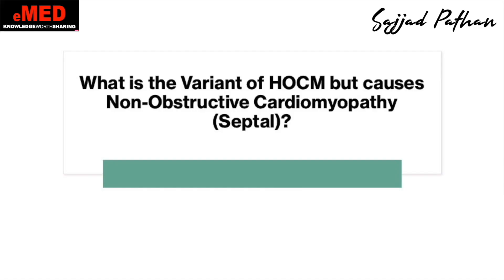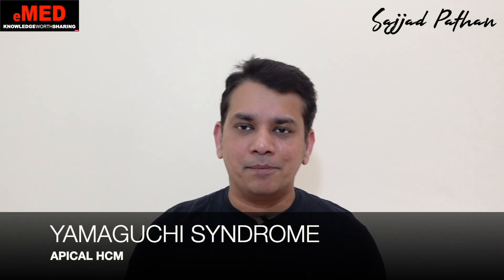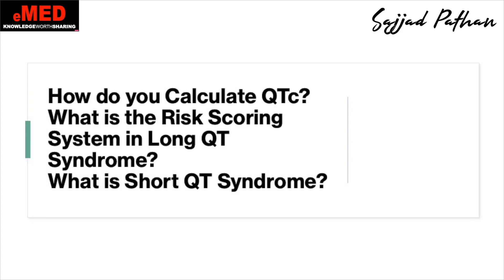Before we end, let's answer the earlier question: what is the variant of hypertrophic obstructive cardiomyopathy that is not obstructive? It is called Yamaguchi Syndrome, where the hypertrophy is apical — it is commonly seen in Japan. Lastly, how do you calculate QTc, what is the risk scoring system used in long QT syndromes, and what is your understanding of short QT syndrome? Put your answers in the comments. Good luck for your exams — study well, stay safe, please subscribe and share this video.